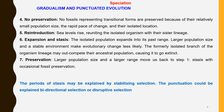Next, preservation. The larger population size and a larger range move back to step one, that is stasis, with occasional fossil preservation. The periods of stasis can be explained by stabilizing selection, and punctuation could be explained by bidirectional selection or disruptive selection.